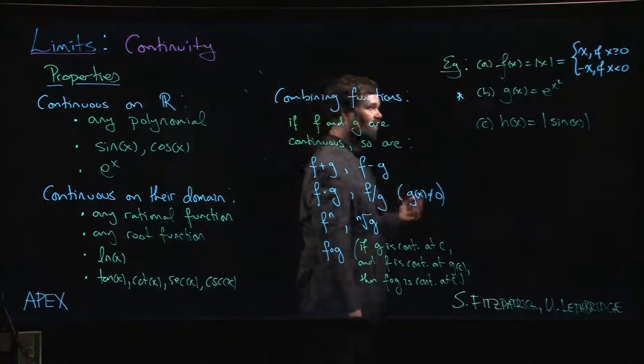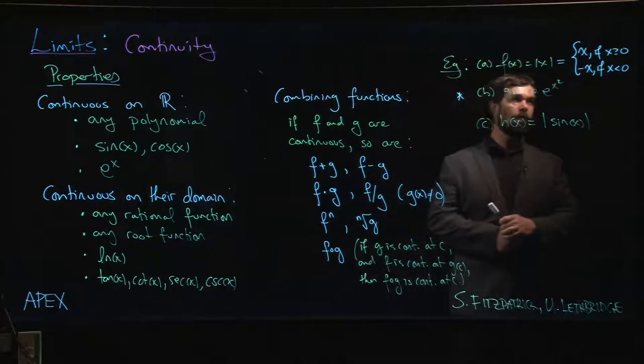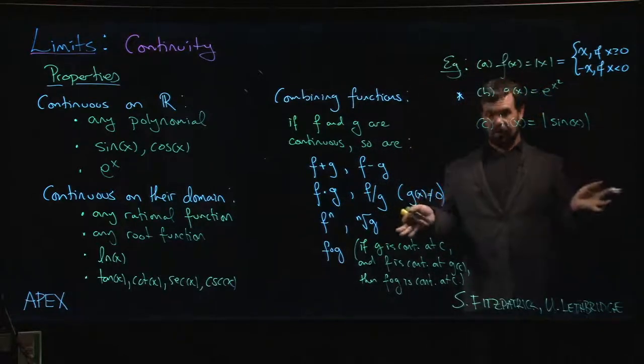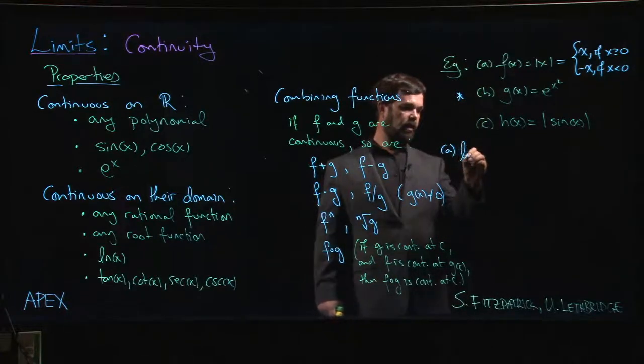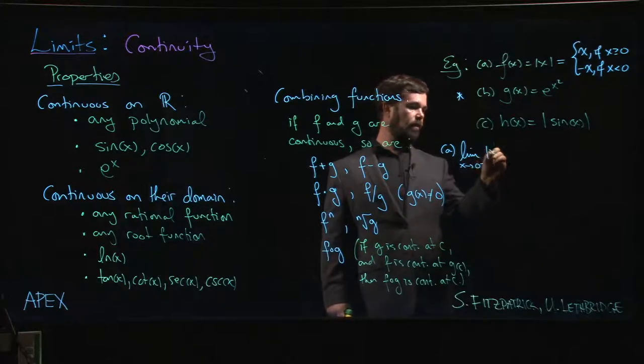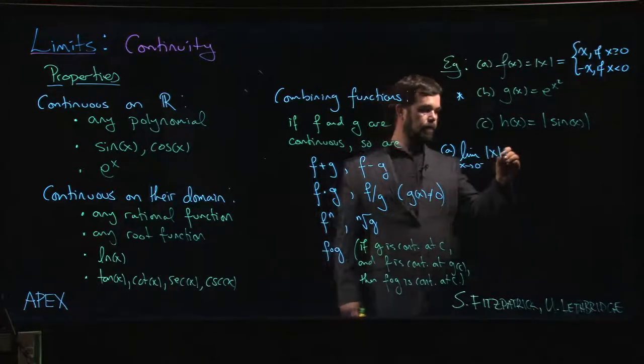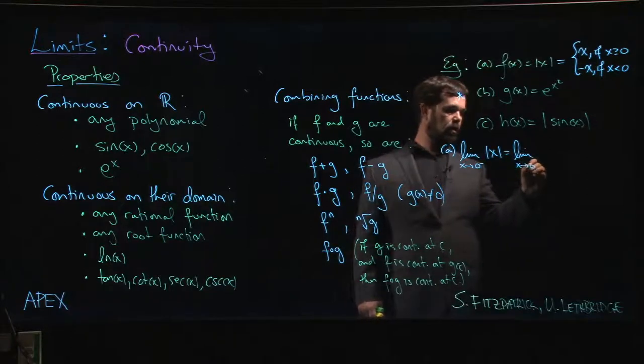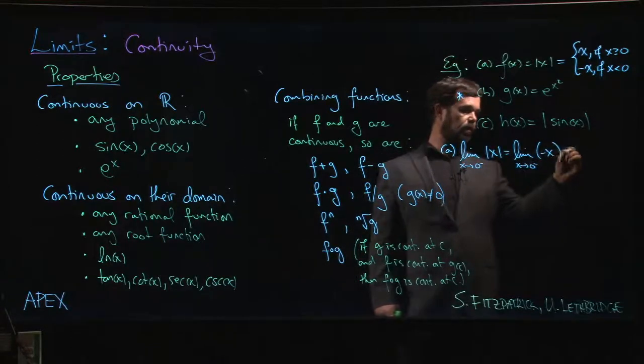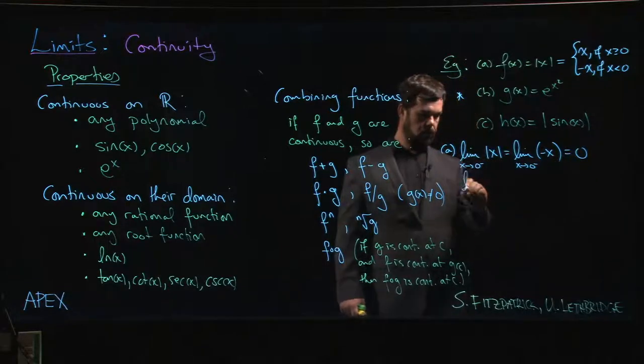Well, first of all, I'd have to do the left-hand limit. So I have to say that the limit as x approaches zero from the left of absolute value of x is the limit as x approaches zero from the left of minus x, which is zero.